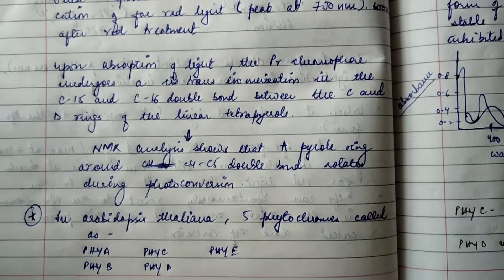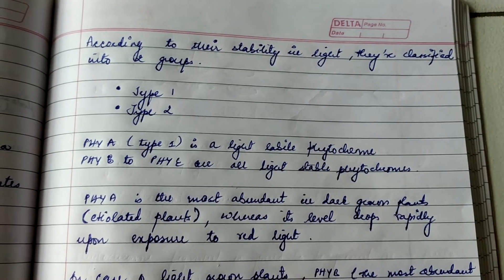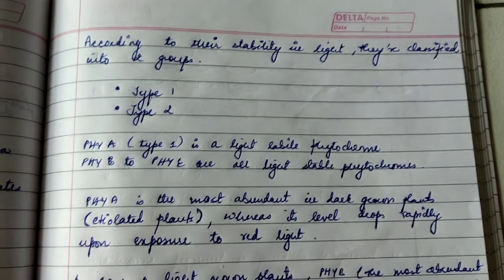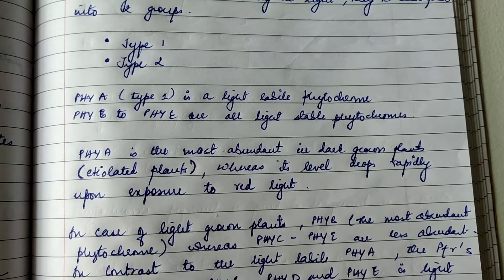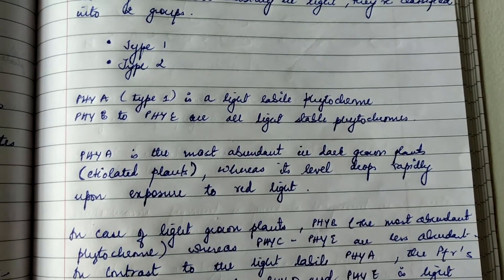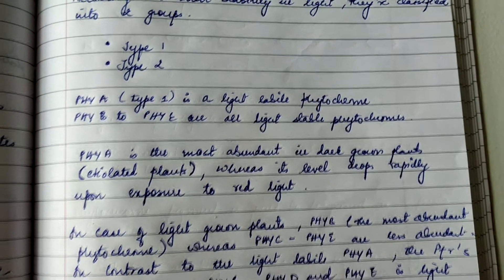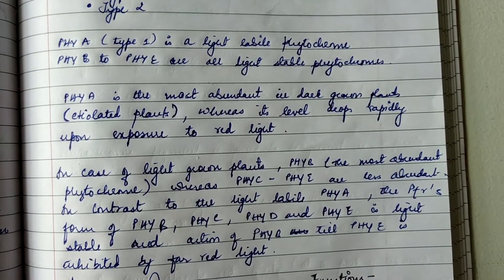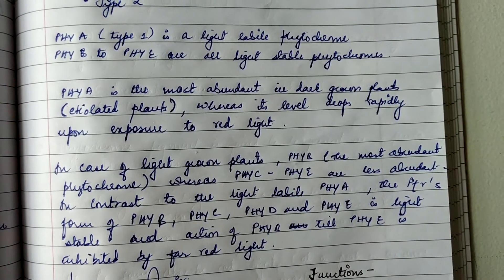In Arabidopsis thaliana, five phytochromes exist: PhyA, PhyB, PhyC, PhyD, and PhyE. According to their stability in light, they are divided into two groups: Type 1 and Type 2. PhyA is the Type 1 light-labile phytochrome and is the most abundant in dark-grown (etiolated) plants, but its levels drop rapidly upon exposure to red light. In light-grown plants, PhyB is the most abundant phytochrome, while PhyC, PhyD, and PhyE are less abundant.